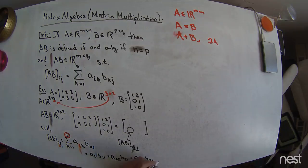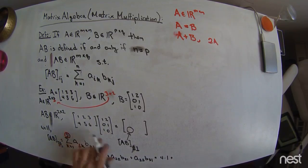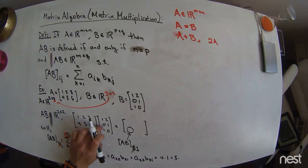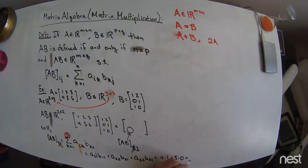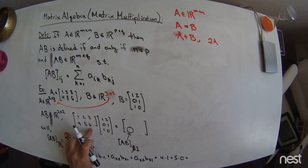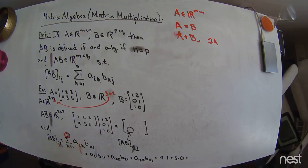And so if I write this out, A sub 2, 1 is going to be 2nd row 1st column. That's a 4, times a 1, plus an A sub 2, 2, that's 5. 2nd row 2nd column, times an A sub 2, 1, 2nd row 1st column from b, which is 0, plus 6, which is the 2nd row 3rd column, plus 3rd row 1st column. Okay, so it's going to be a 4, plus a 0, plus a 6, so that's a 10. So this element right here is a 10.